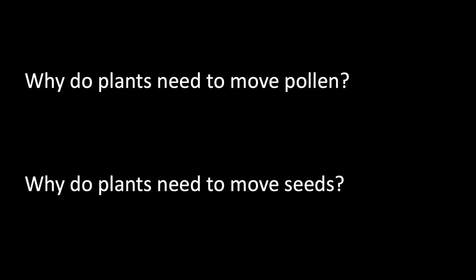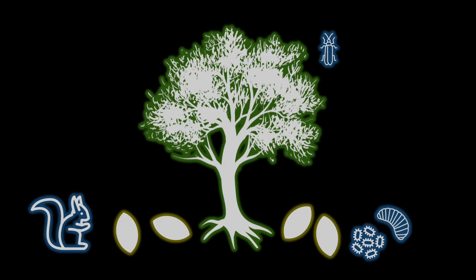Why do plants need to move seeds? Let's think about plants in the context of an ecological community and what their offspring represent to other members. A seed is a food resource for other organisms, and most seeds don't move very far away from the parent plant. The closer you get to a parent plant, the more seeds you're going to find, and therefore the more seed predators and seed pathogens you're going to find. So moving away from a parent plant can increase seed survival.